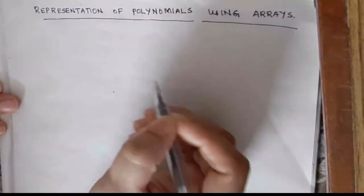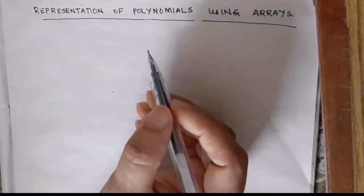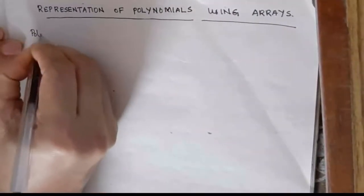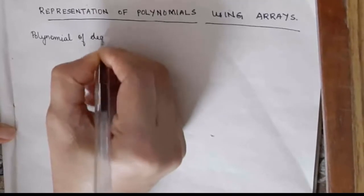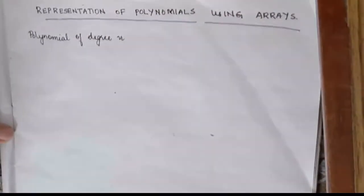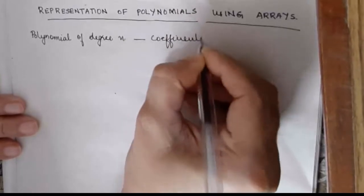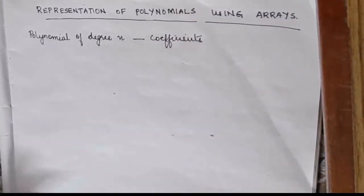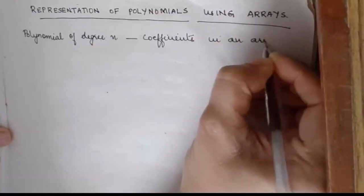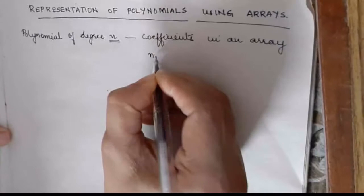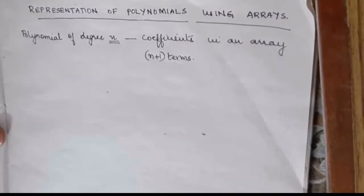Arrays have a benefit — we can represent polynomials easily using arrays. For example, if you have a polynomial of degree n, we can store the coefficients of these polynomials in an array. How many coefficients will you store? If the degree is n, there are n plus 1 terms, so we can store n plus 1 coefficients.